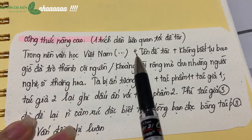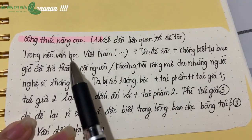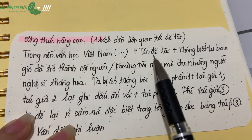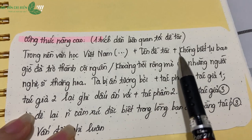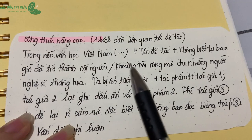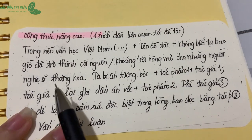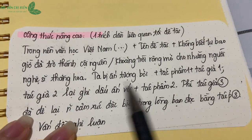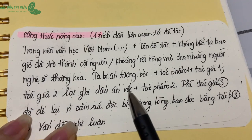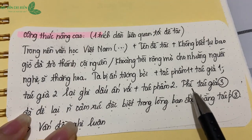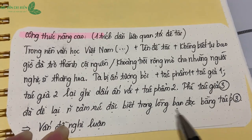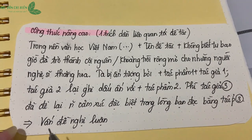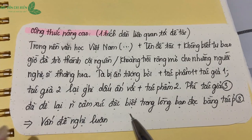Trong nền văn học Việt Nam hiện đại, trung đại, hoặc trong nền văn học kháng chiến - cộng với tên đề tài - 'không biết từ bao giờ đã trở thành cội nguồn, hoặc trở thành khoảng trời rộng mở cho những người nghệ sĩ thăng hoa.' Ta đã từng bị ấn tượng bởi tên tác phẩm 1 của tác giả 1, sau đó tác giả 2 lại ghi dấu ấn với tác phẩm 2. Hãy chú ý: tác giả 3 và tác phẩm 3 ở đây chính là tên tác giả và tên tác phẩm của vấn đề nghị luận mà chúng mình đang cần làm rõ. Sau đó chúng mình dẫn vào vấn đề nghị luận.